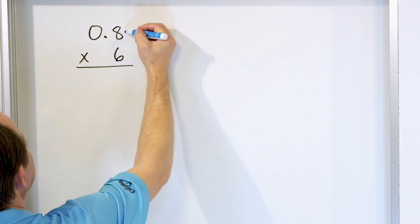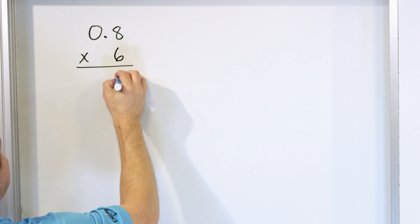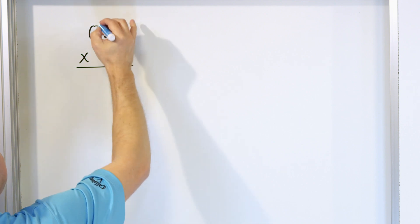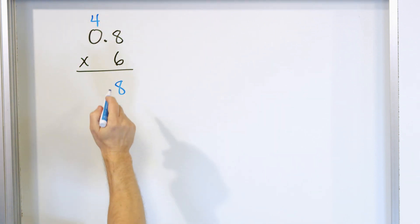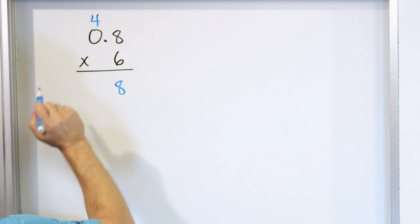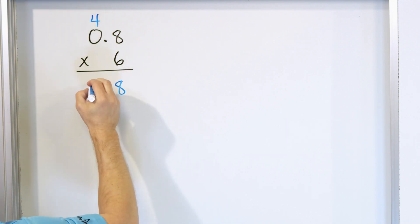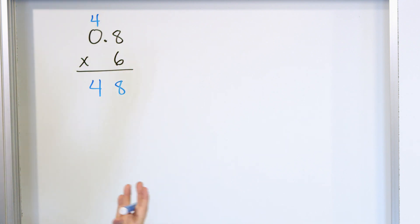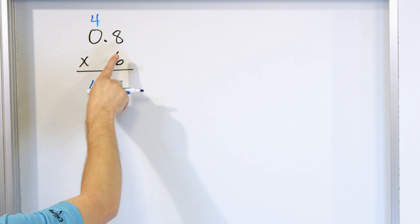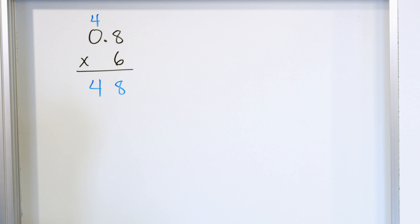I start on the right. 8 times 6 is 48, so I write the 8 and carry the 4, just like usual. I ignore the decimal. 0 times 6 is 0, and then I add 4, which means I have a 4. Now there's nothing left to multiply. If the decimal point wasn't there, the answer would be 8 times 6, which is 48.